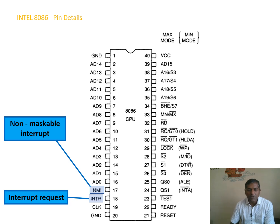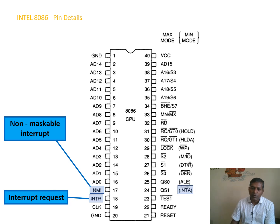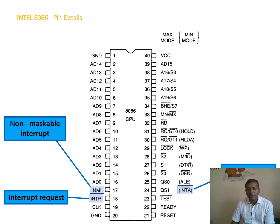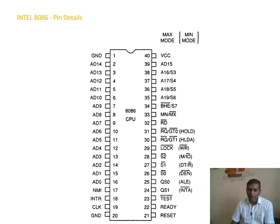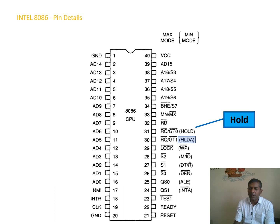We have the INTR interrupt request pin, which is an input to the microprocessor — it is the interrupt request generated by other peripherals. Whenever the microprocessor gets INTR as an input request from a peripheral, the 8086 immediately generates an acknowledgement signal to that device. We also have HOLD and HLDA pins, where HOLD is an input and HLDA is the acknowledgement signal to a peripheral device.